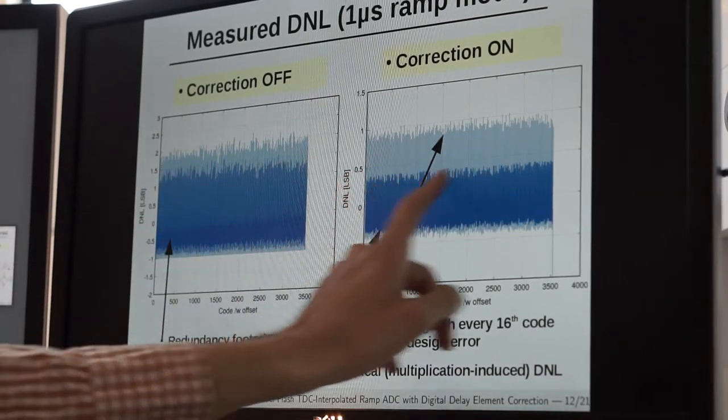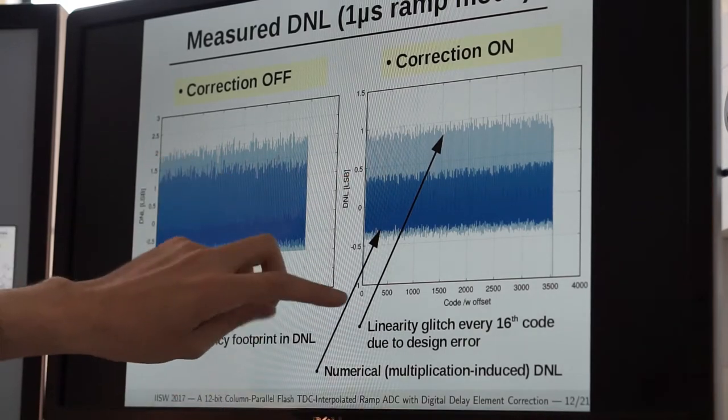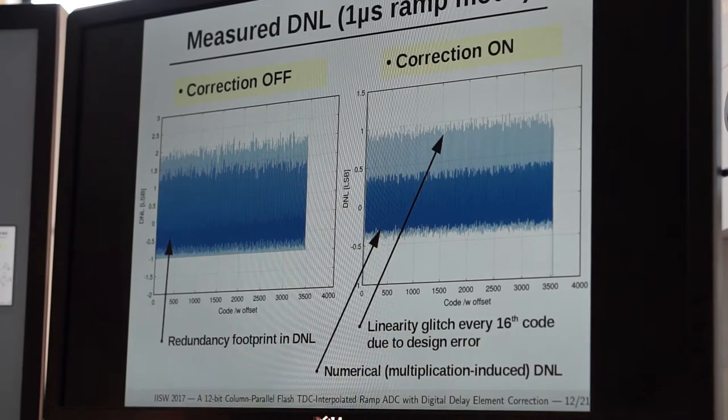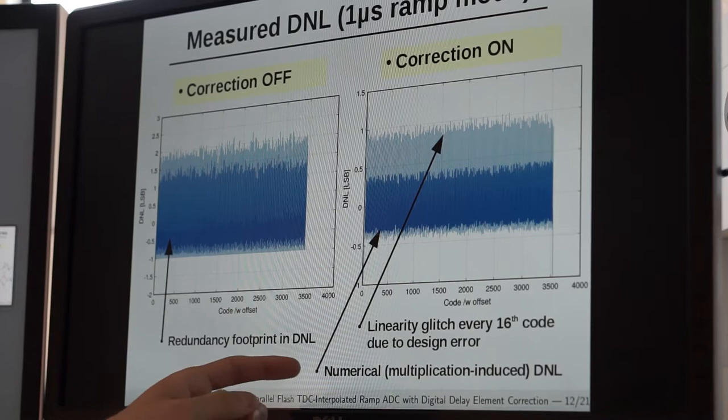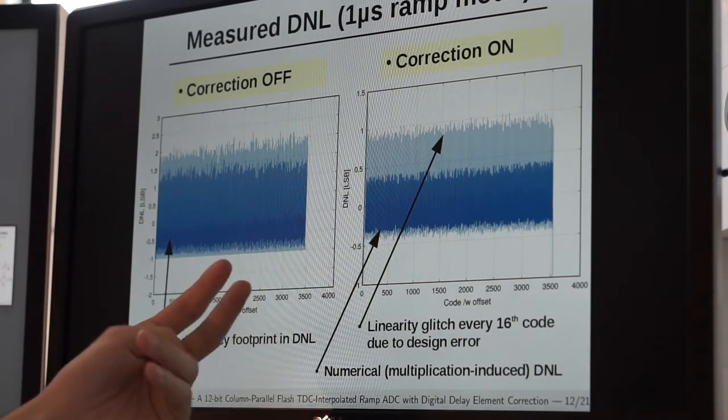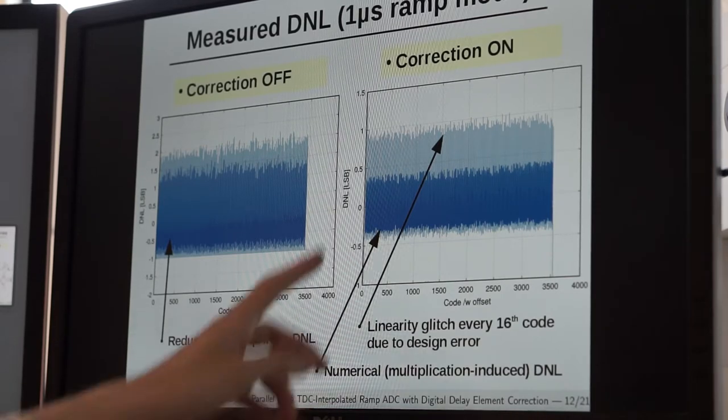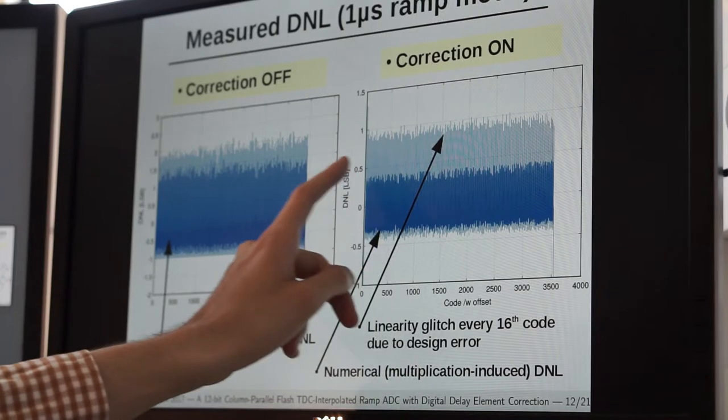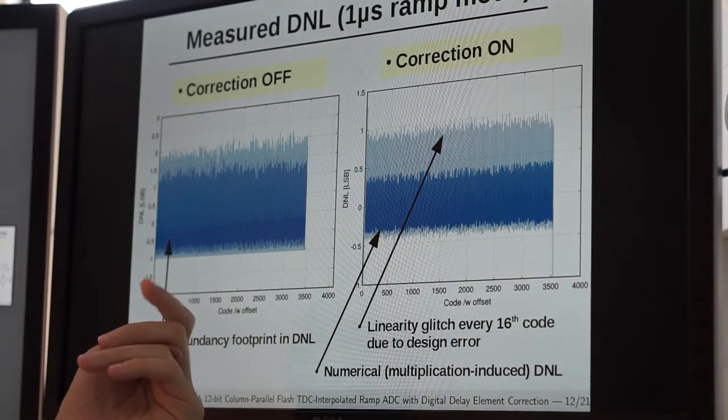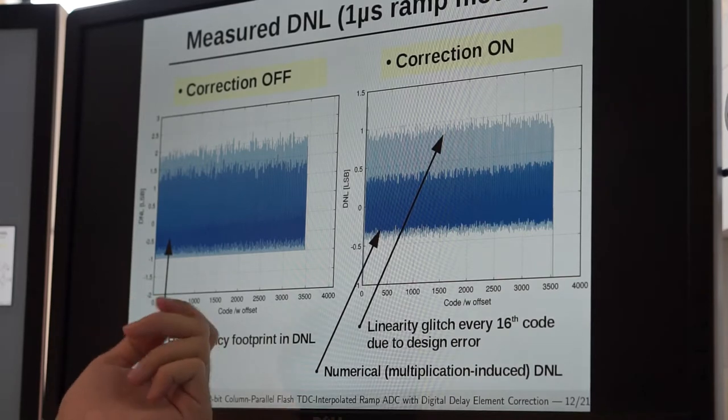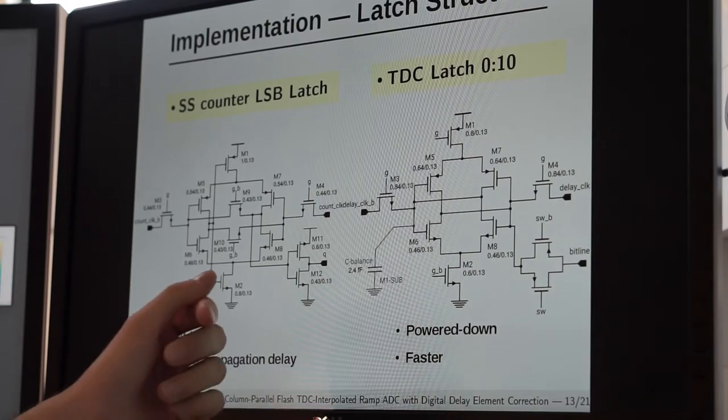The first is the differential linearity less than 0.5 LSB in this darkened area - the DNL caused by multiplication, primarily induced by numerical noise which translates into DNL of 0.5 LSB and matches our predicted theoretical model. However, there's also a slight linearity glitch leaning towards 1 LSB, exhibited on every 16th code. This was caused by a design error, and I'll show you briefly why that happened.